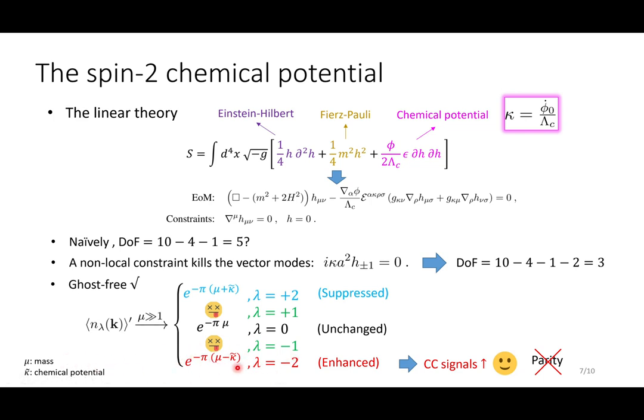In the large mass limit, this number density reduces to a simple form given by this list here. For a positive chemical potential kappa, the occupation number of the minus 2 helicity modes are exponentially enhanced, while those of the plus 2 helicity are exponentially suppressed. And the longitudinal mode is unaffected by the chemical potential, while the plus 1 and minus 1 helicity are killed by the non-local constraints. So this is a special feature of the chemical potential added to the Lagrangian.